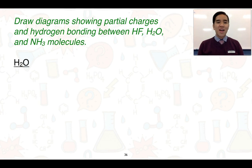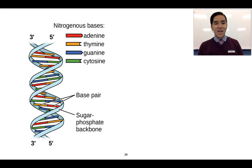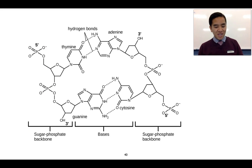We're going to look specifically at how to draw diagrams showing partial charges and hydrogen bonding for H₂O, HF, and NH₃. Before we finish, it's important to look at why hydrogen bonding is so relevant to us — one way is by looking at DNA. DNA is comprised of a double-stranded molecule with a double helix structure, and the reason this double helix forms is because of hydrogen bonding. We have the phosphate-sugar backbone and nitrogen-containing bases: adenine, thymine, guanine, and cytosine.